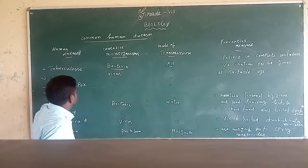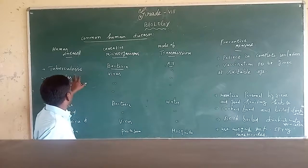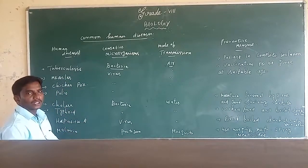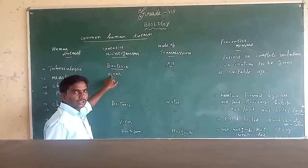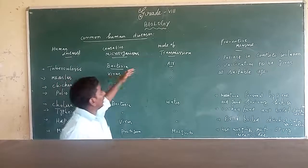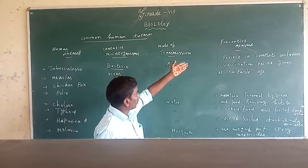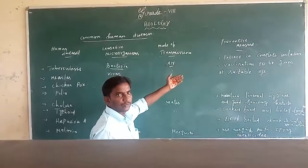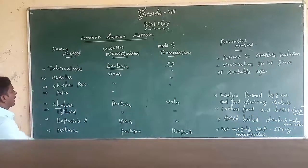The next disease is measles. This type of disease is caused through a virus. The mode of transmission is through the air. The preventive measures are the same: the patient is completely isolated, and vaccination is to be given at the proper age.